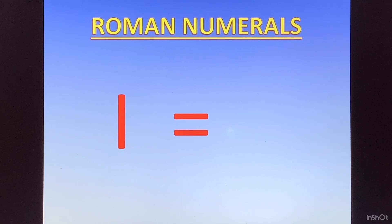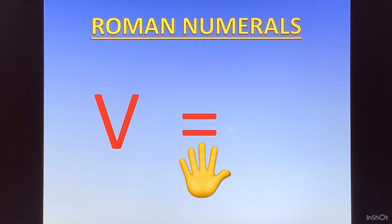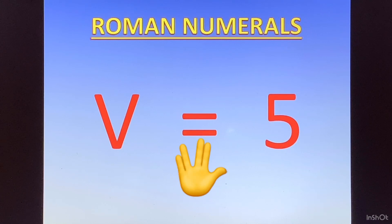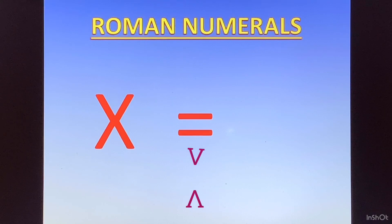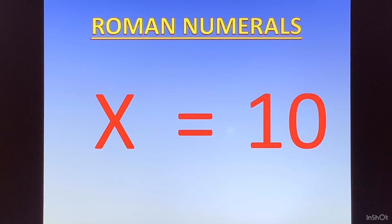The first one is I which represents 1. Now how to remember: I looks like 1, so its value is 1. Second is V. V represents 5. Next is X. When you take two V's you can make an X, so the value of X is 10.